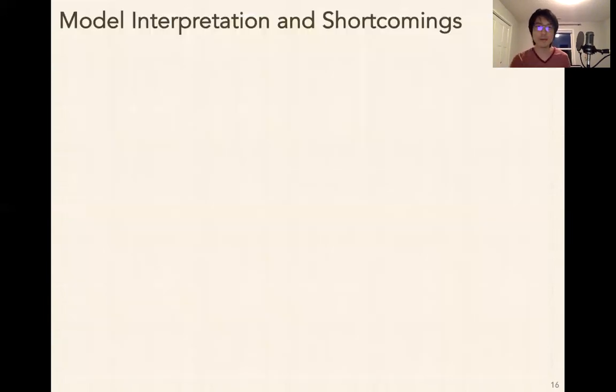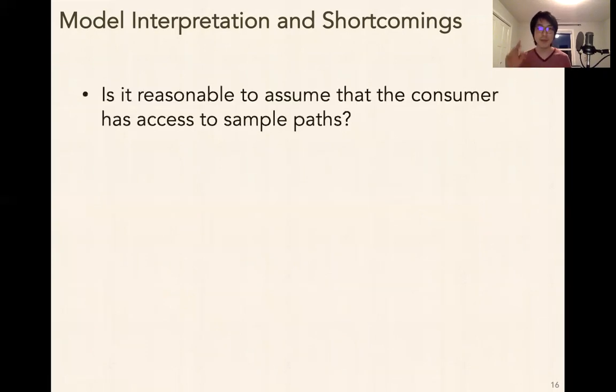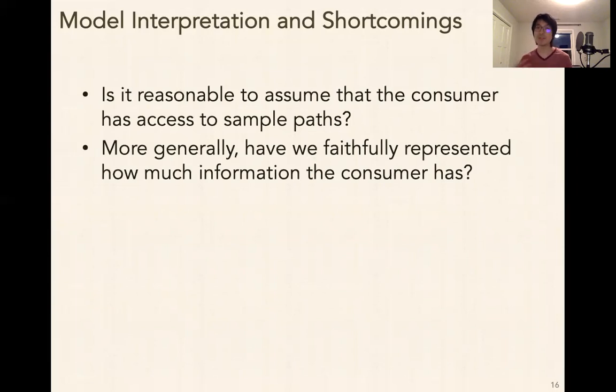I talked about how this is preliminary work, and there are a lot of shortcomings here that we'd love to talk about and address in future work. Please message me or email me in some capacity if you have any thoughts or comments about any of these bullet points. I'm happy to chat about it. I think it's a really cool direction that I'm really excited to pursue. So the first one is, we relaxed the assumption about knowledge of PFT and the probability distributions to the point where the consumer only had access to sample paths. But is that reasonable? Is that assuming too much information for the consumer? More generally, have we faithfully represented how much information the consumer has? So we're really looking at real-world applications and data sets that we can kind of apply some of these methods to make sure that some of these assumptions are realistic.